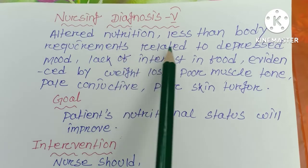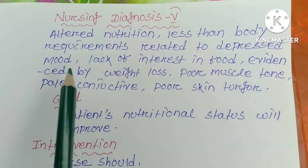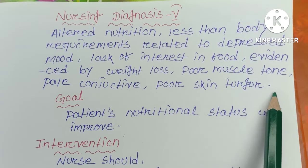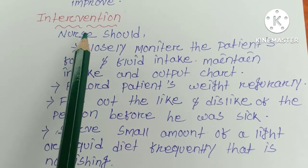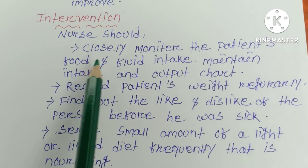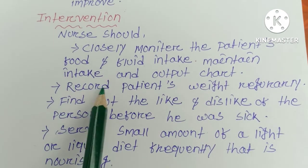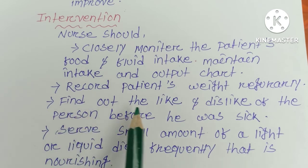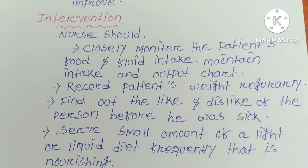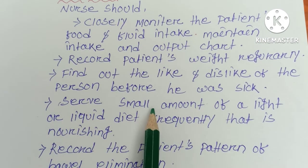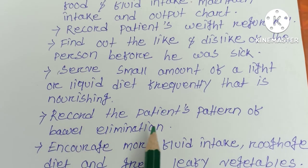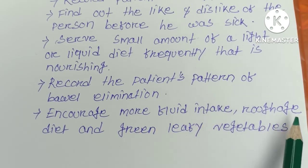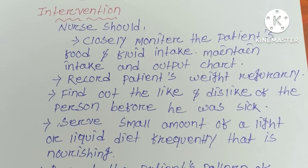Nursing Diagnosis 5 is altered nutrition, less than body requirements, related to depressed mood and lack of interest in food, evidenced by weight loss, poor muscle tone, pale conjunctiva, and poor skin turgor. The goal is that the patient's nutritional status will improve. Interventions: the nurse should closely monitor the patient's food and fluid intake, maintain intake and output chart, record the patient's weight regularly, find out the patient's food likes and dislikes from before illness, serve small amounts of light or liquid diet frequently that are nourishing, record the patient's bowel elimination pattern, and increase intake of roughage diet and green leafy vegetables.